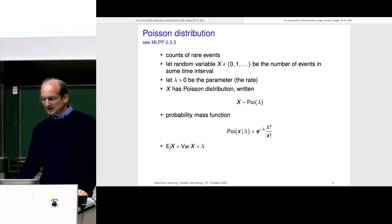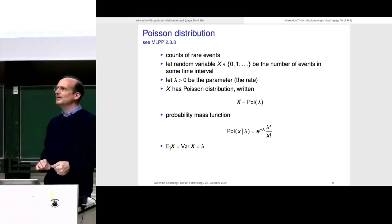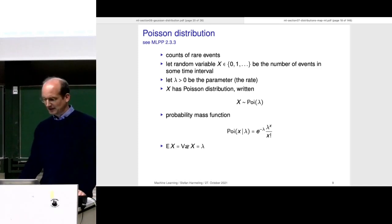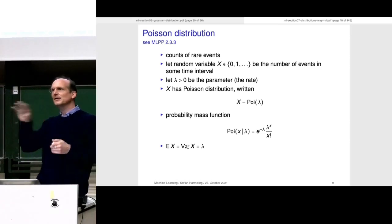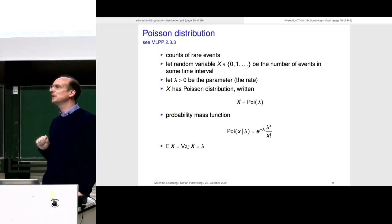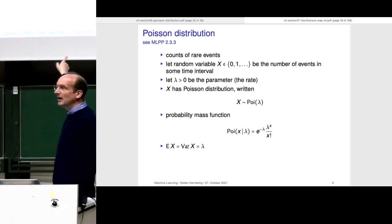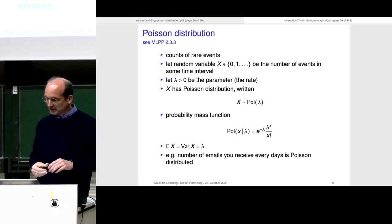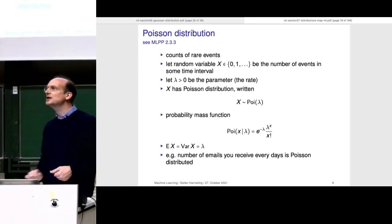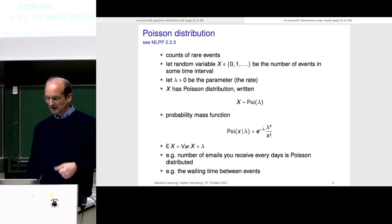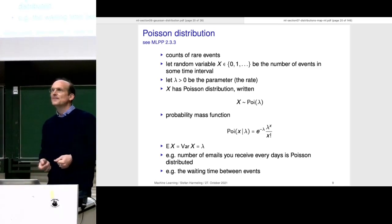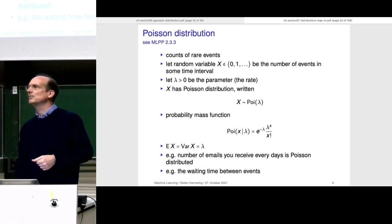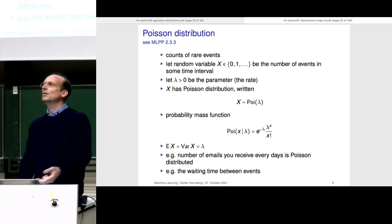The expectation is like a first-order moment and the variance is second-order, and for the exponential function all derivatives are just e^x — that's how it plays out that both parameters are the same. An example: the number of emails you receive per day is Poisson distributed — the rate can change during the day depending on whether people sleep. Another example: cars arriving at a gas station.